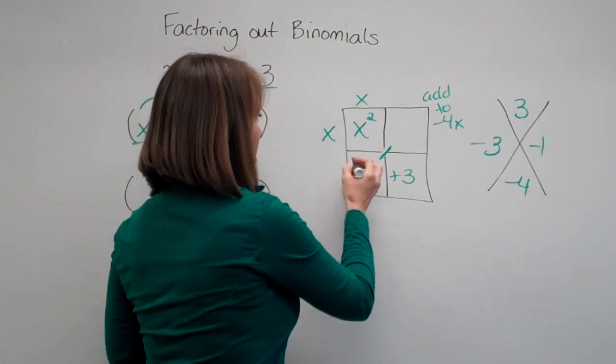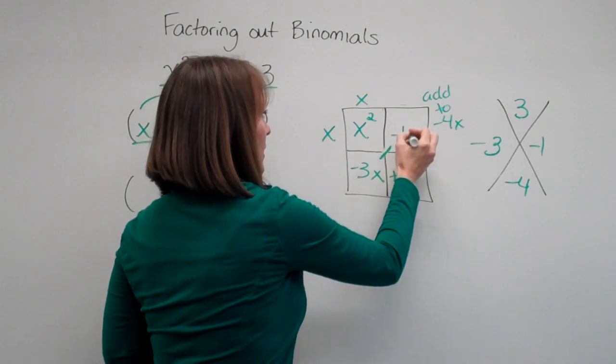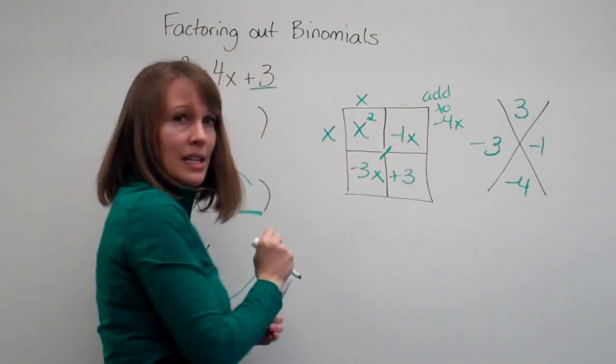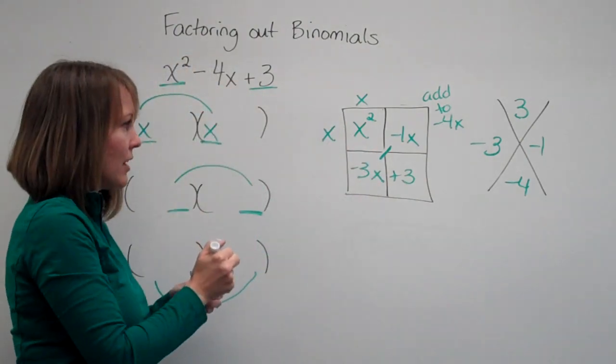Let's put this in our box and see what happens. x squared minus 4x plus 3. It is what we started with.